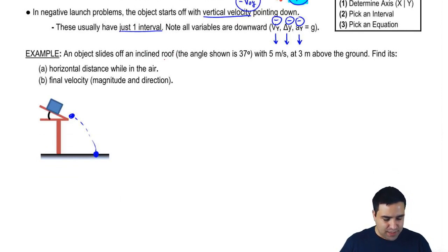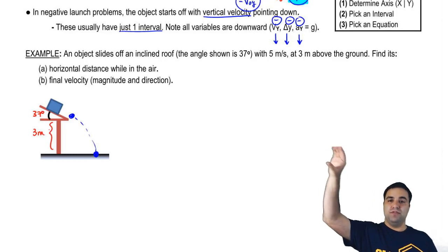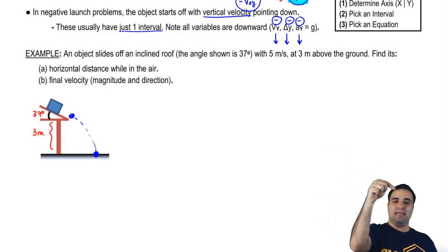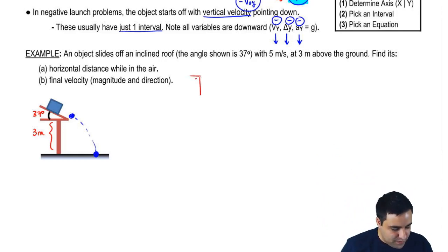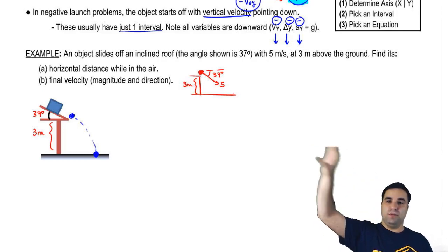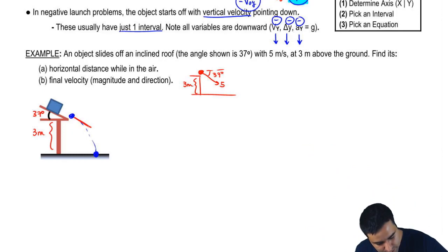So here I have an object that slides off an inclined roof. The angle shown is 37 degrees. It comes off the roof with five meters per second, three meters above the ground. So the idea is that when you come off the roof, you're going to have a velocity pointing in that direction. The angle of the roof becomes the angle of the initial velocity here. So this is actually 37 degrees, that's my initial theta. And my initial velocity is five.